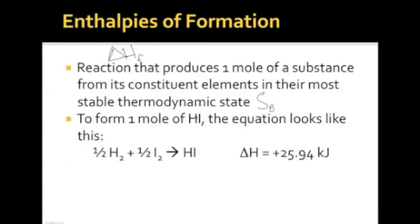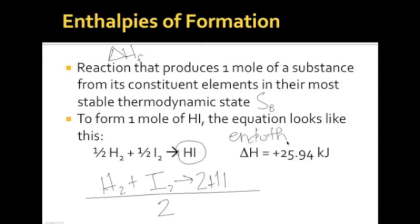So to form one mole of hydrogen iodide, the equation looks like this. It would, if we were balancing it pre-AP style, it would look like this. But this is a formation of one mole of a substance, so we take this entire equation and divide it by two, hence the one-halves. And the delta HF formation for this is a positive 25.94, which means that this is an endothermic reaction, or that these elements would actually rather be hydrogen and iodine and not hydroiodic acid, or hydrogen iodide, depending on if it's dissolved in water or not.